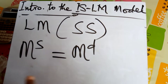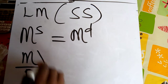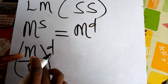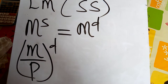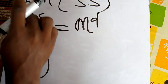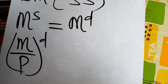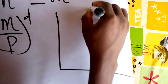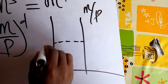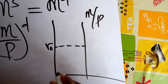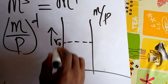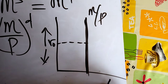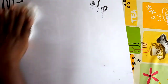Real money demand is M over P. The money supply is constant and vertical when plotted against the interest rate. At any given interest rate level, money supply stays fixed. What we should know is that the money supply is always constant.